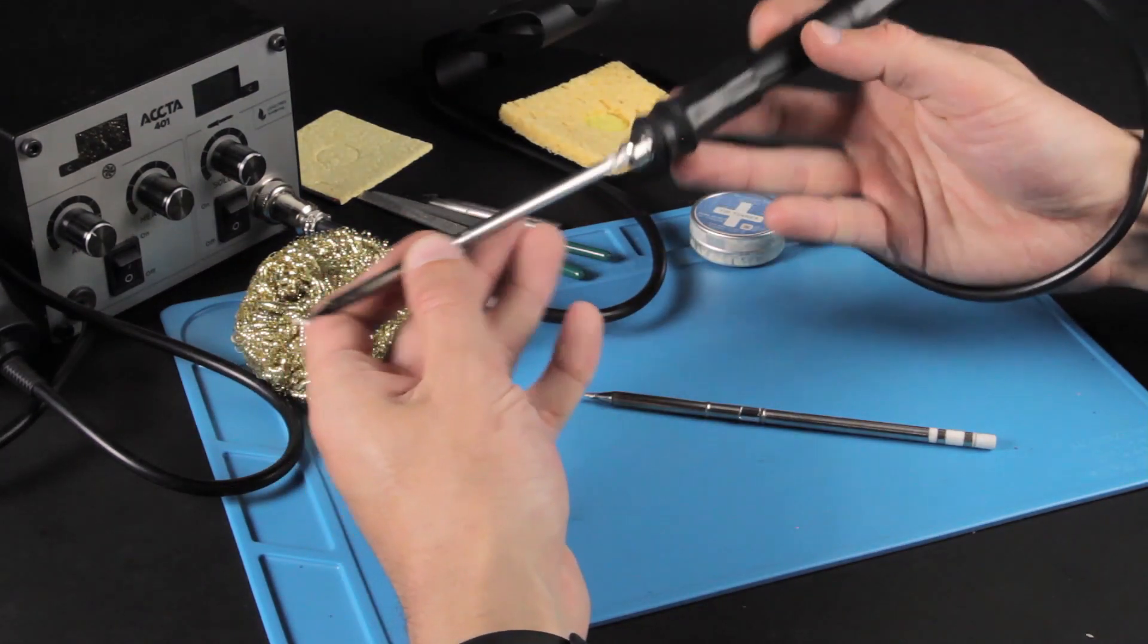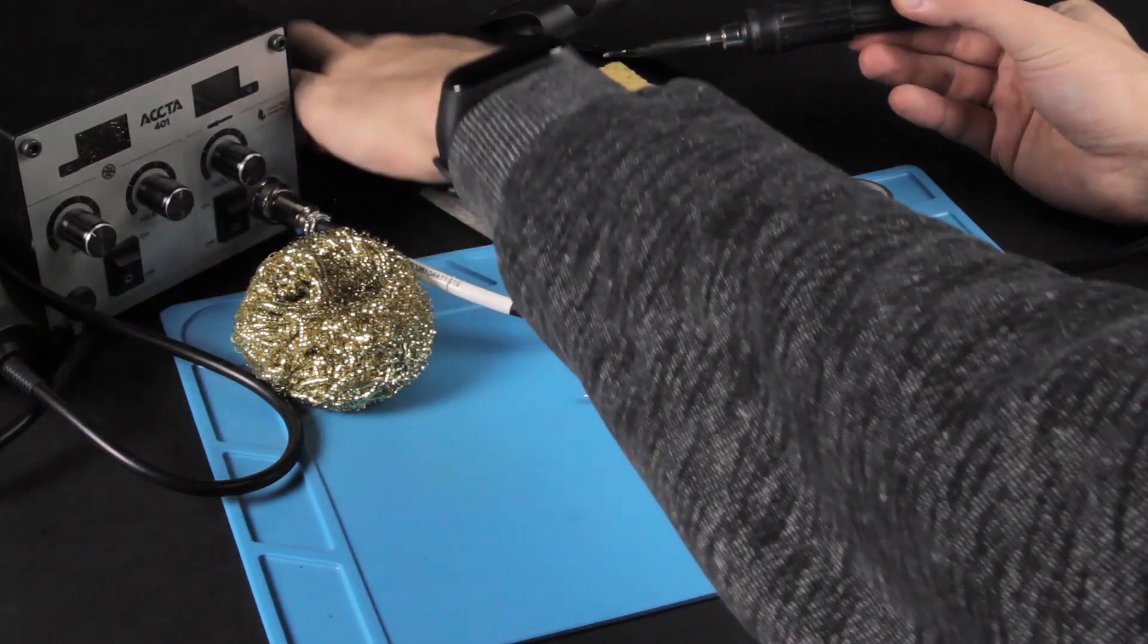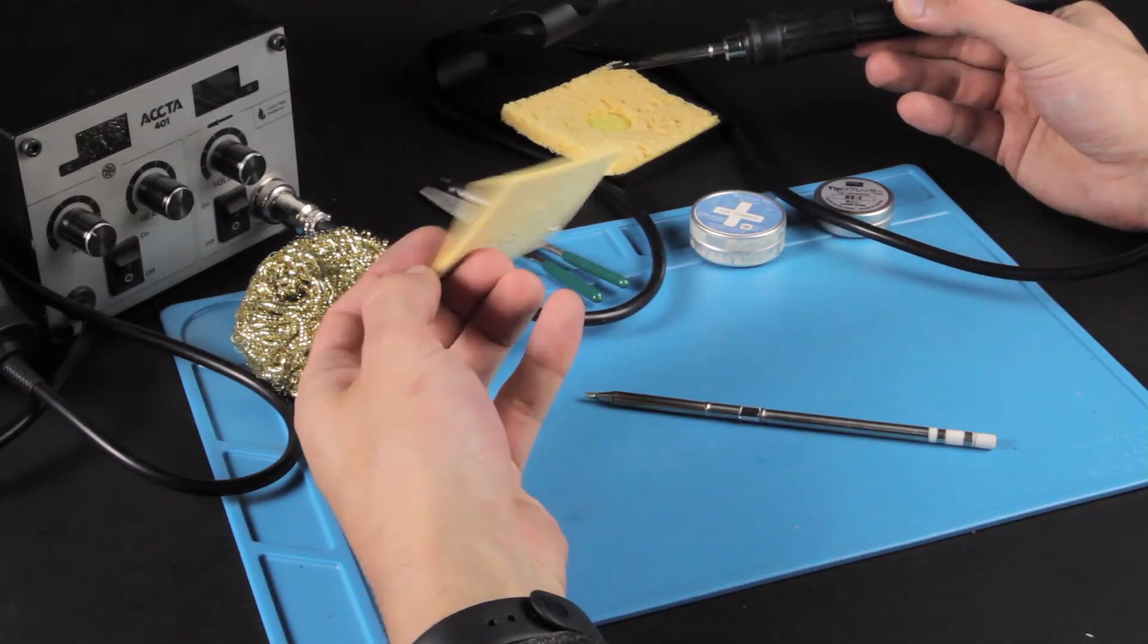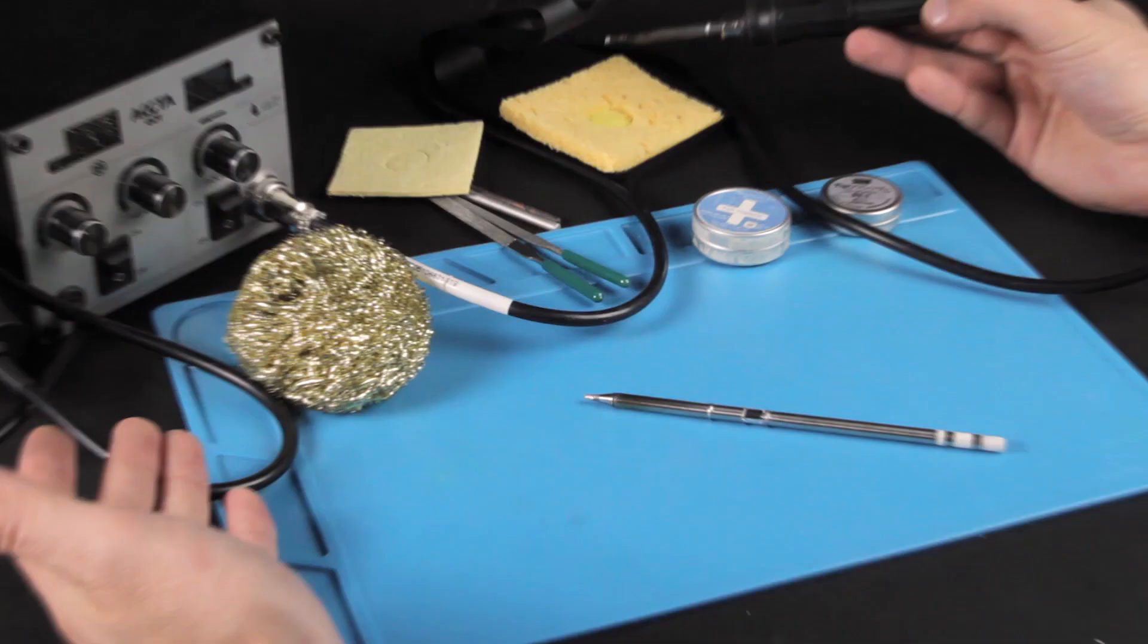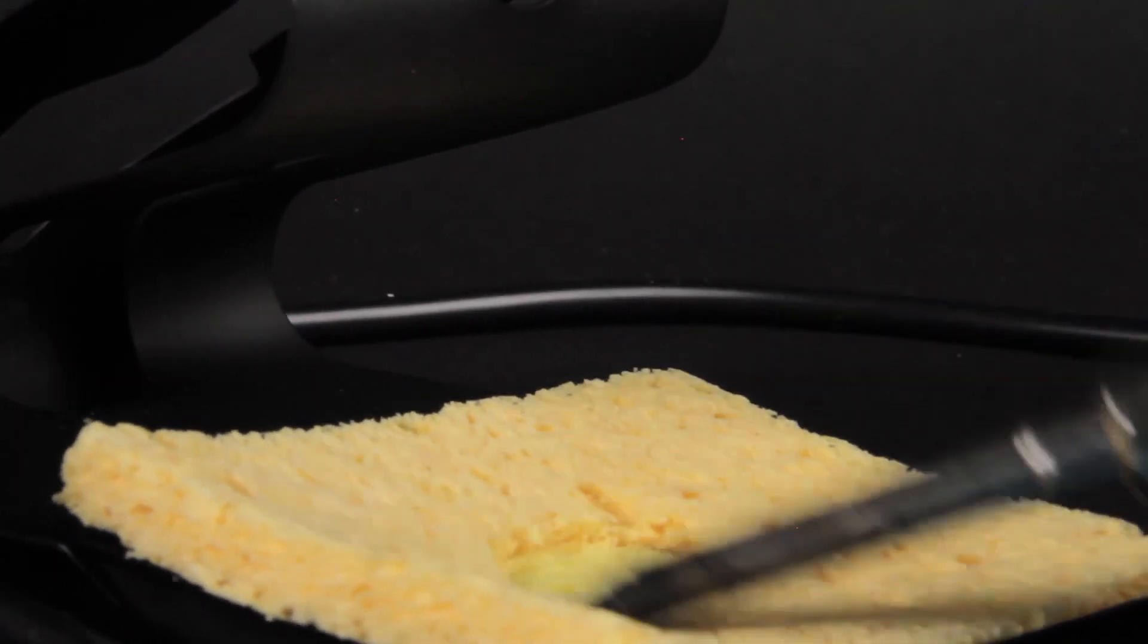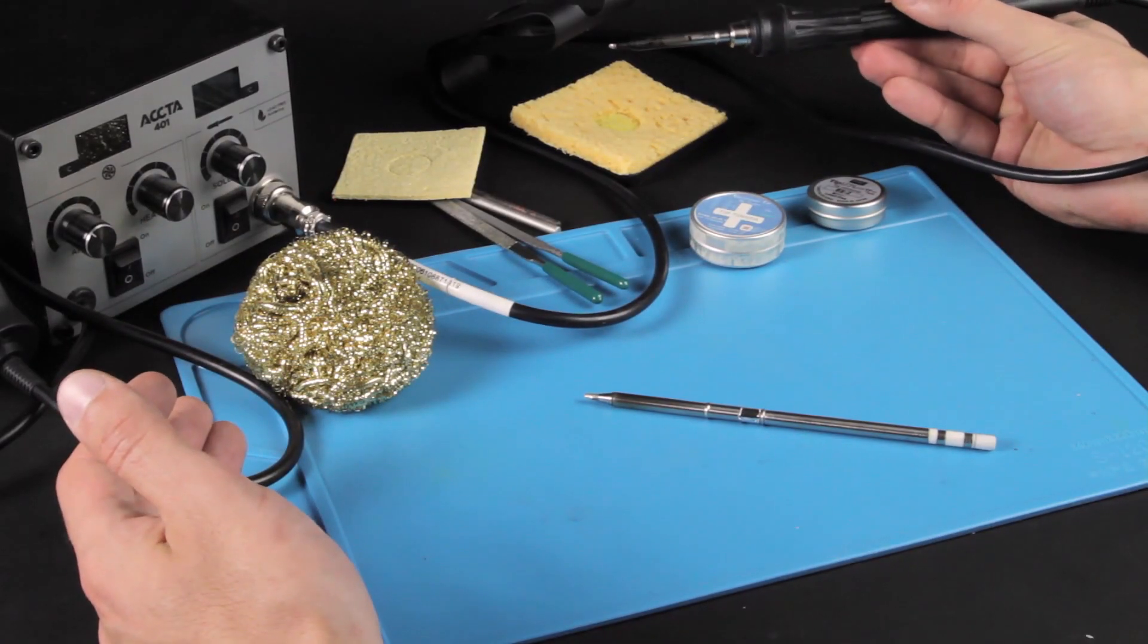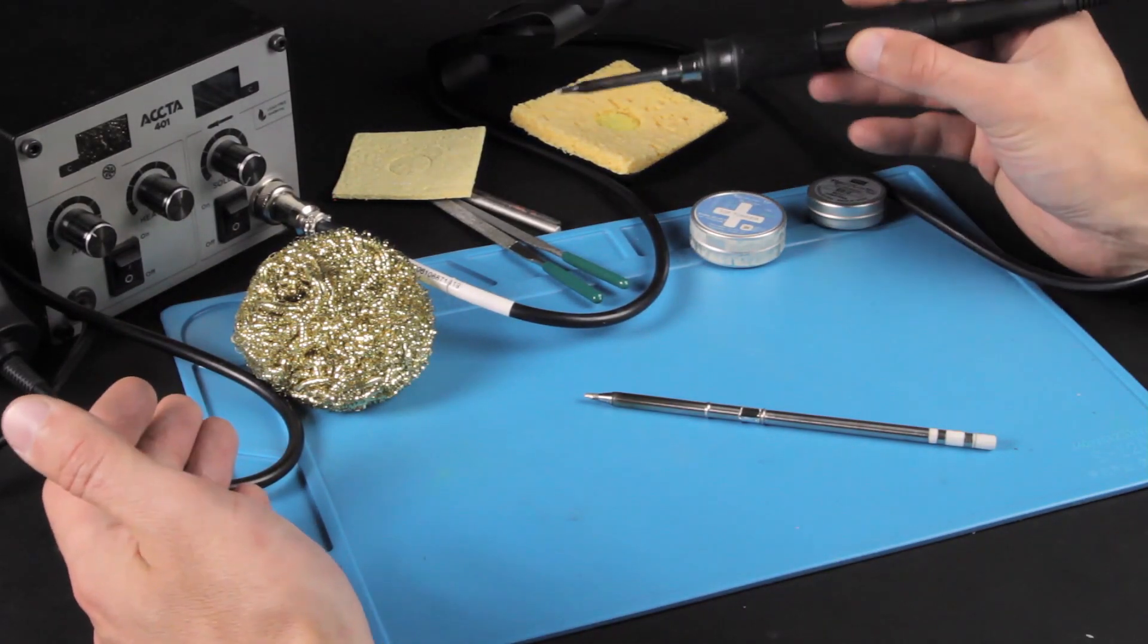However, you need to do the following to maintain its operability. First of all, you should use a cellulose cleaning sponge to keep it clean. Just remember, the sponge has to be wet. Just move the tip like this to clean it. This is the cheapest method. But it has one disadvantage – a wet sponge cools down the tip and the soldering iron needs extra time to heat it up again to operating temperature.